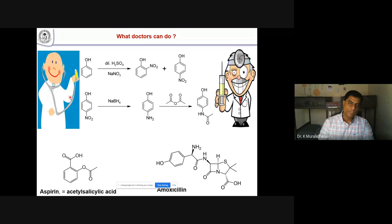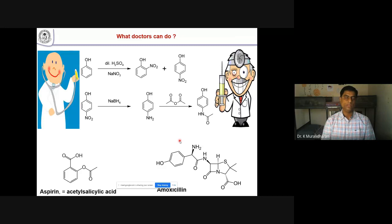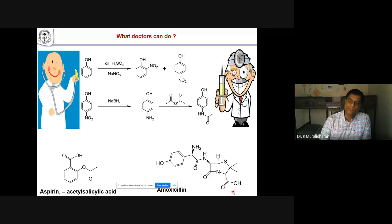Just the last slide — about doctors. The aspirin synthesis from salicylic acid: this reaction will be given in your laboratory in the fourth semester. Only when chemists design the reaction and produce this compound can doctors use it. Aspirin is a very common broad-spectrum antibiotic given for many diseases by doctors, but chemists make this material.